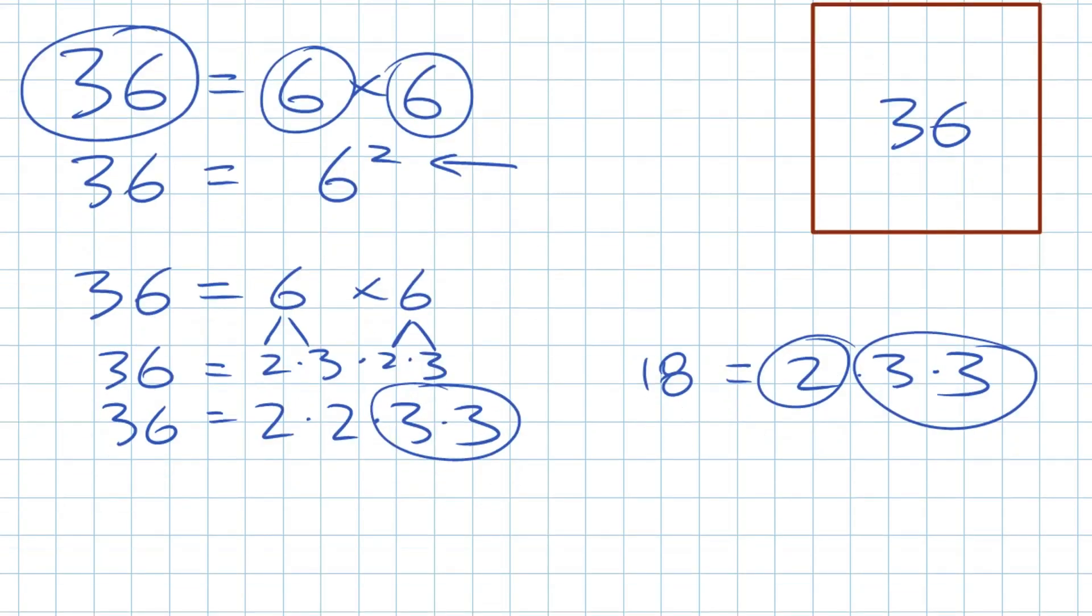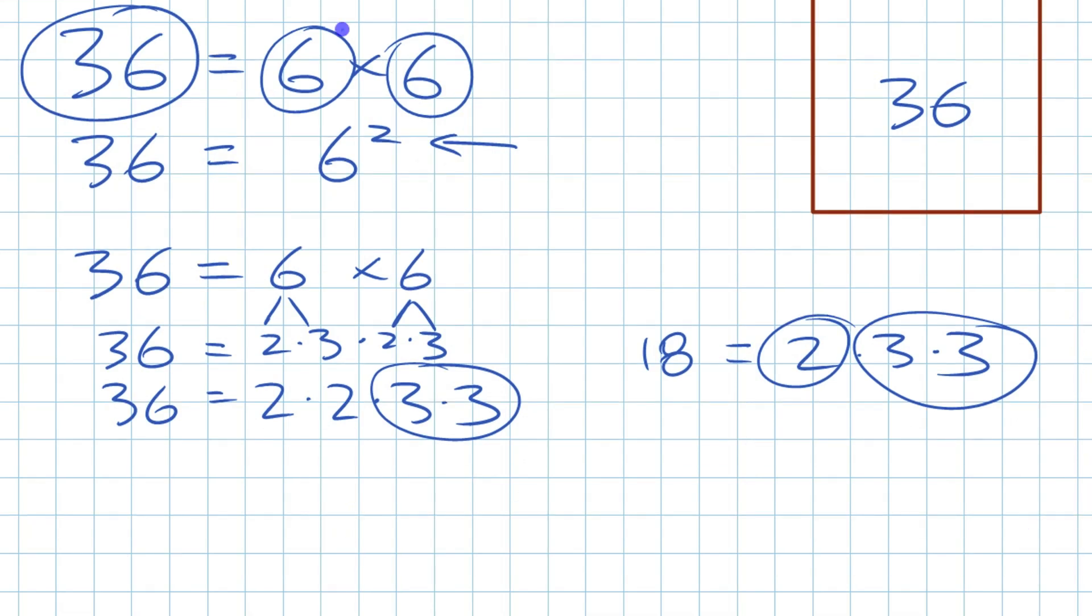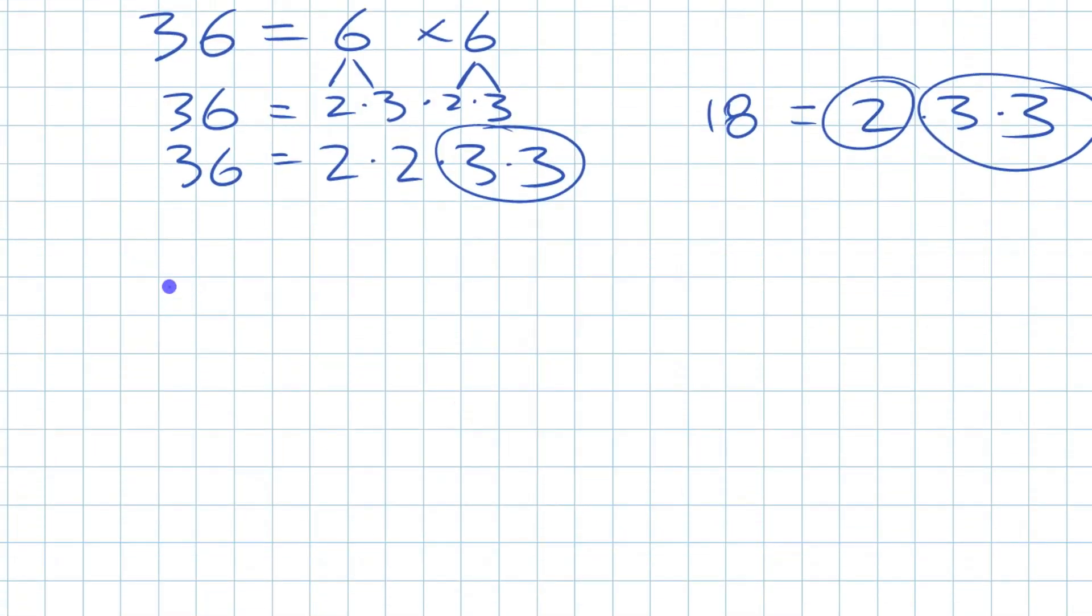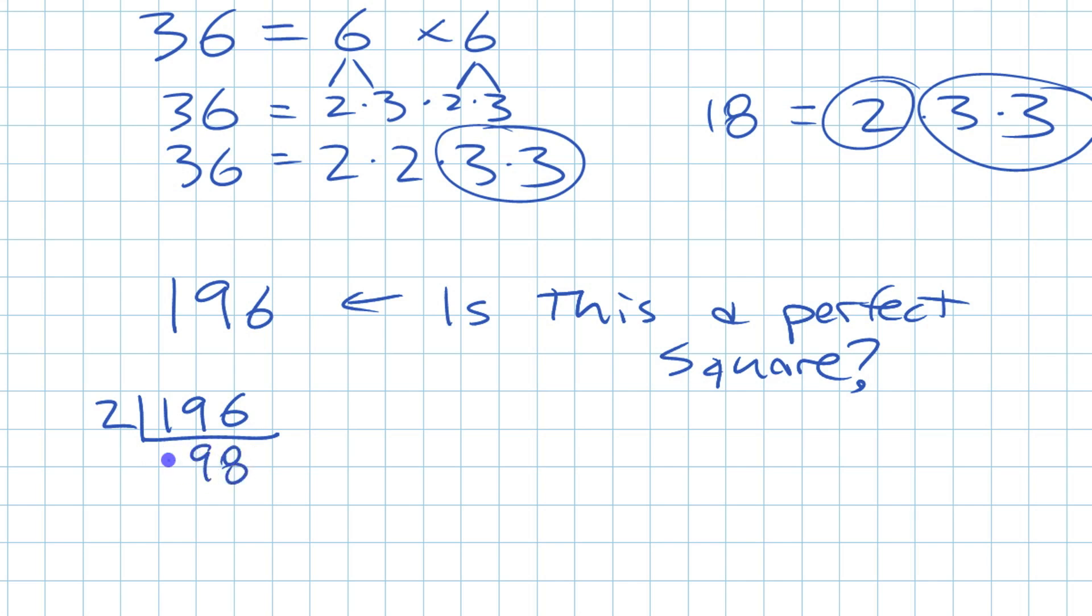So that's one way you can tell that a number is a perfect square. If you know its prime factors, look at whether they occur in pairs. Like if you have a number like 196. Is this a perfect square? Well, if we want to find out one way, again, it's just to look at its prime factors. If you break this down, start by trying to divide it by 2 here. You get 98. I can divide it by 2 again. You get 49.